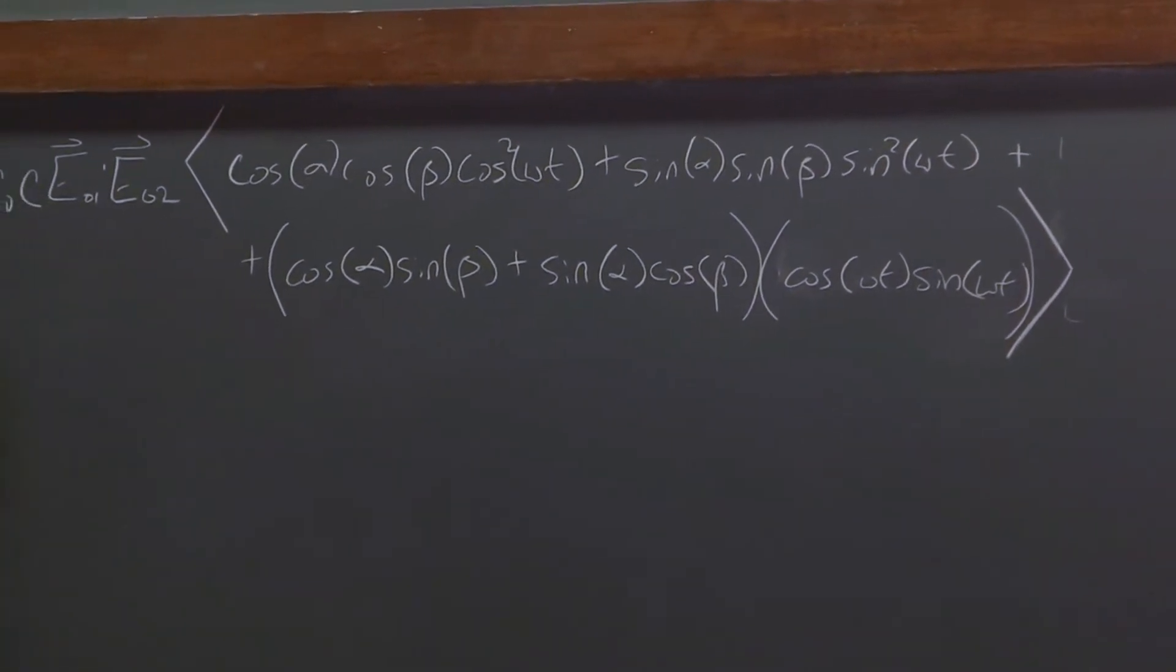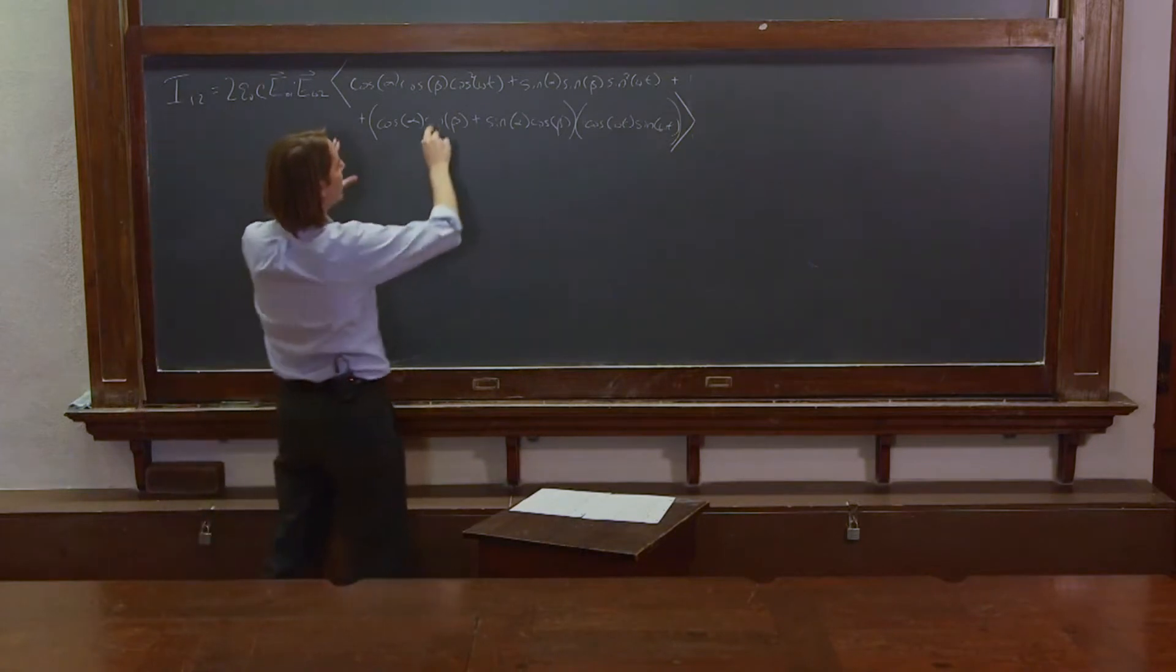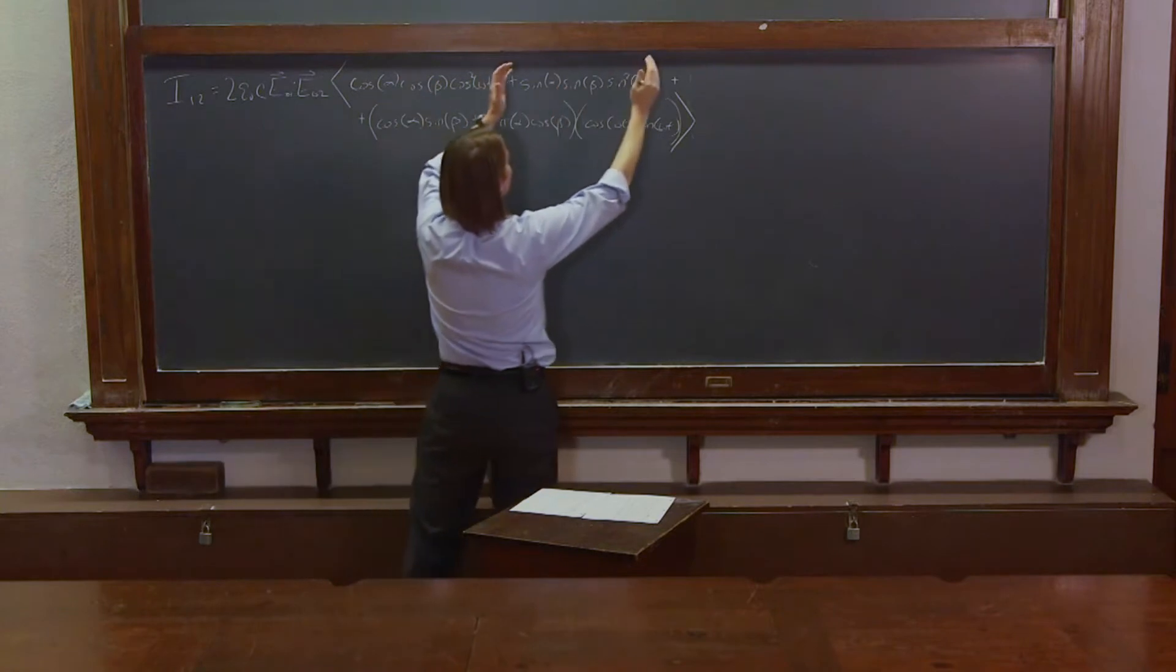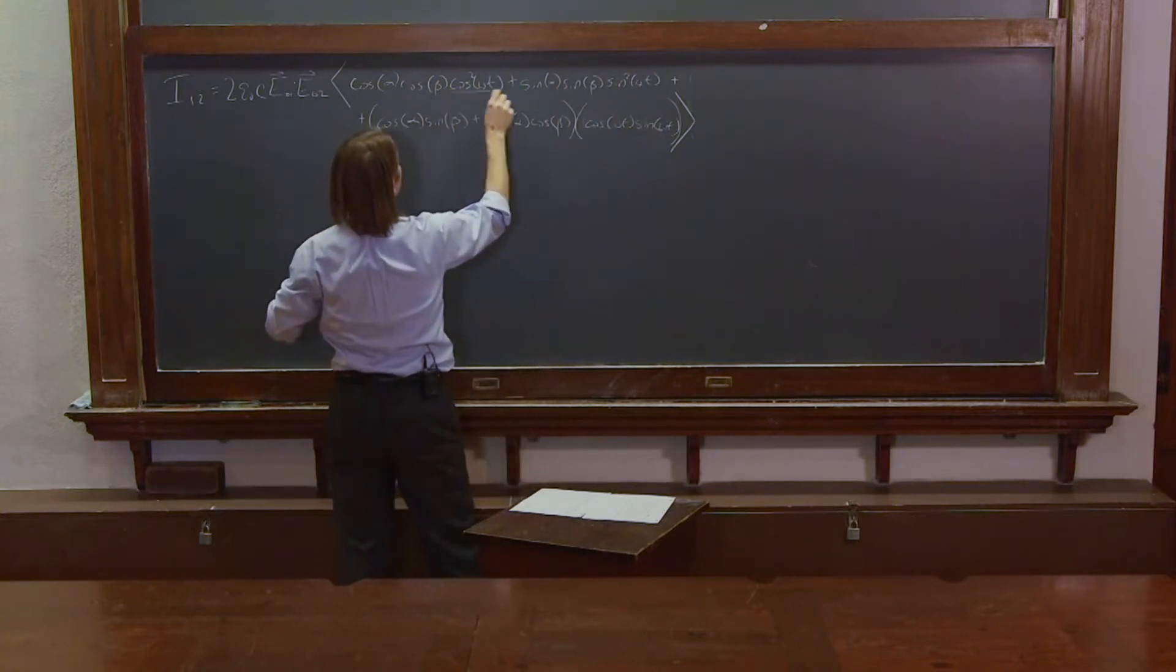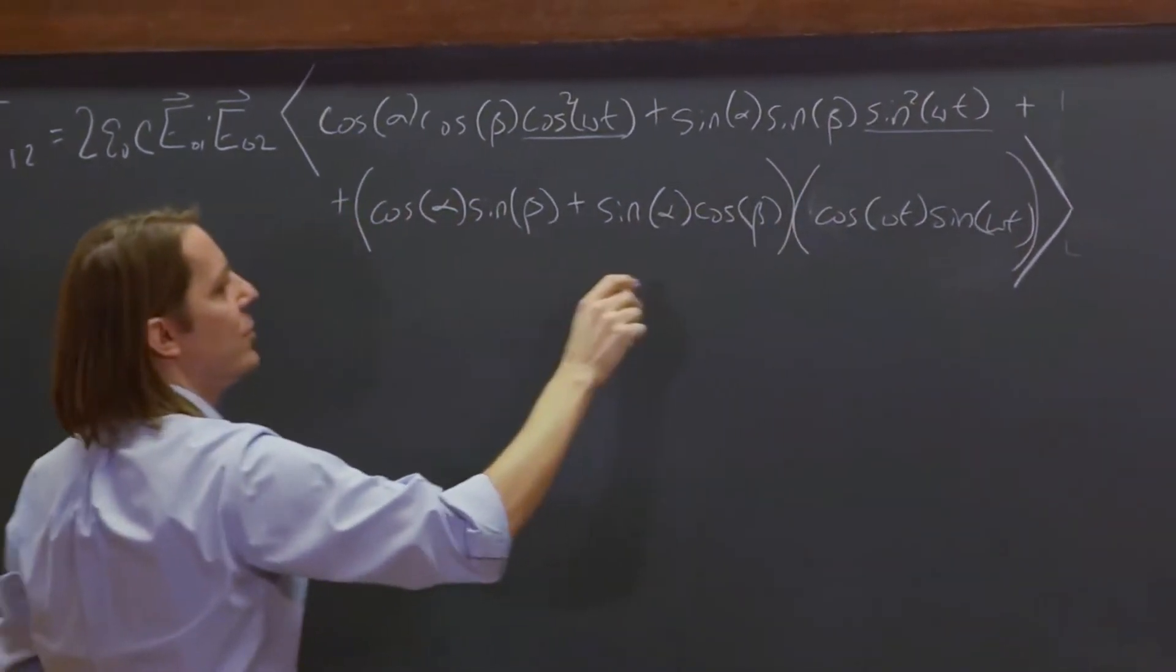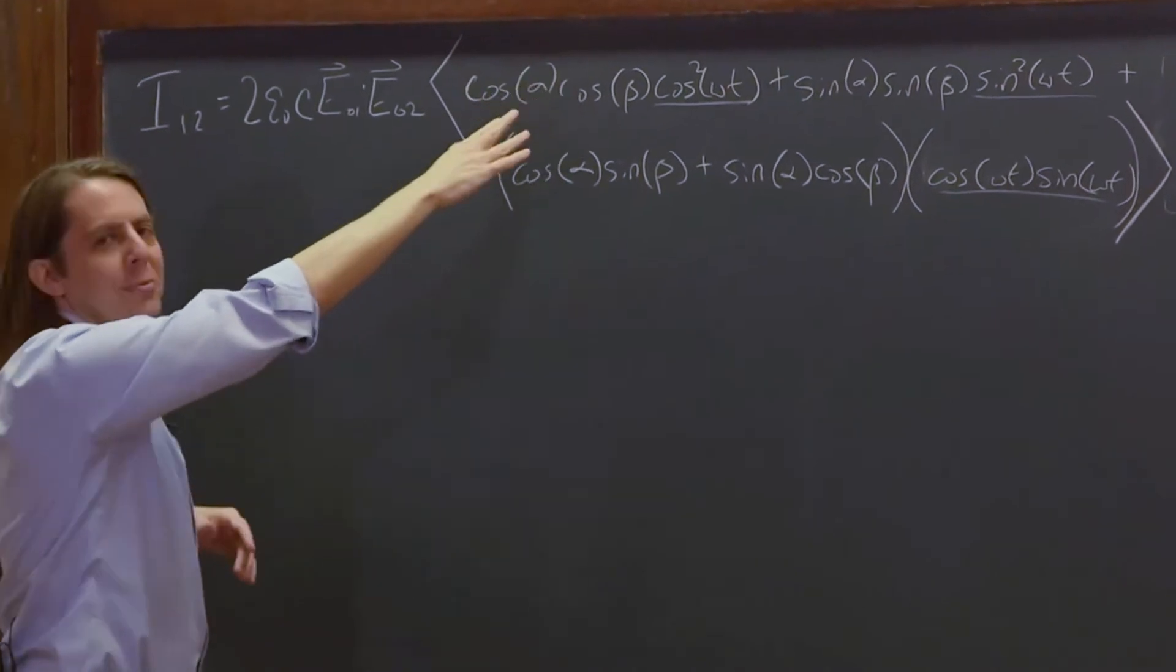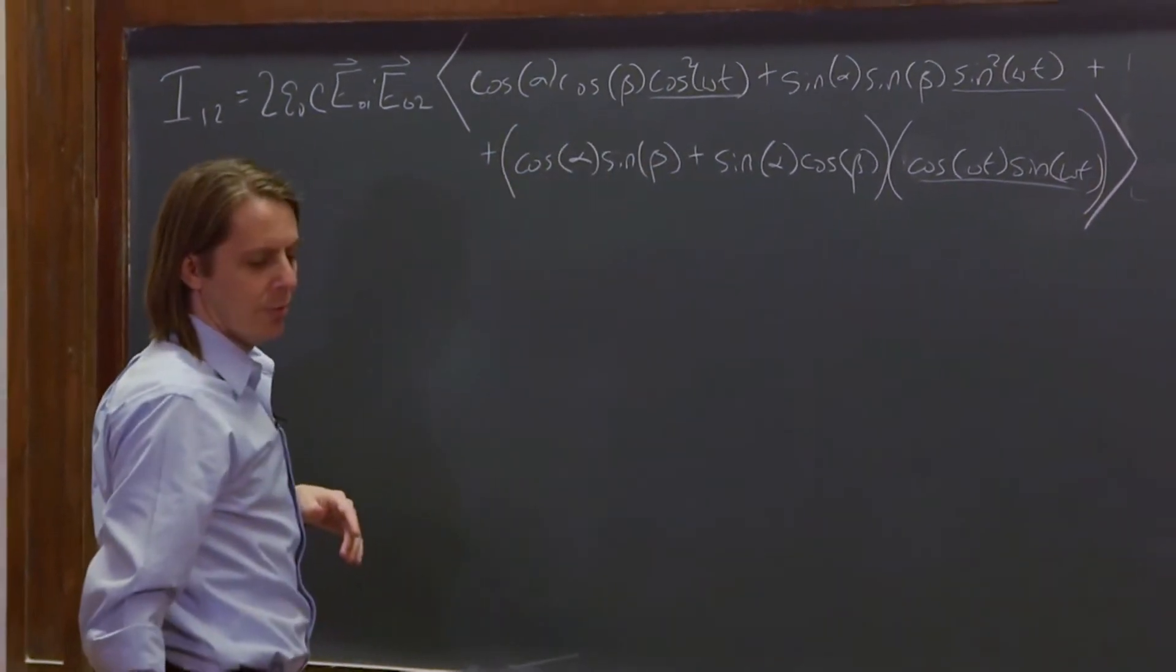So that looks like a mess. But the reason we did it this way is because now we can break it up into individual time averages. We can time average this, and we can time average this, and we can time average that. And the time components are now alone inside of the sinusoids. So we can pull the spatial components out of the time average and just take the time average of those parts.